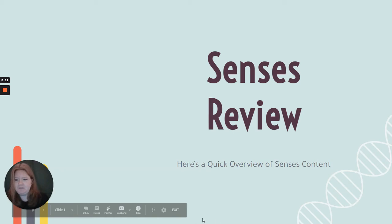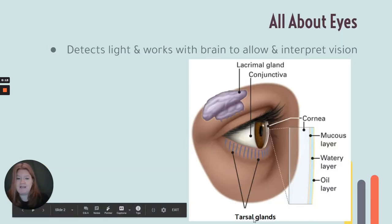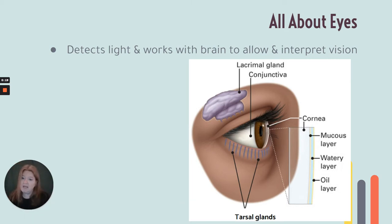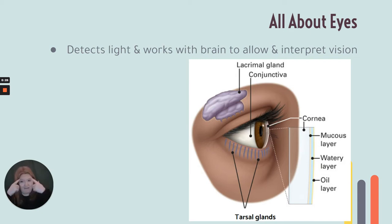The first topic we covered in this unit was eyes. I'm going to talk about protection. Remember, eyes are designed to detect light and work with our brain to help us interpret vision — interpret what we see. They need some protection. We have eyebrows, we have eyelashes, we have eyelids — those all serve as a layer of protection.